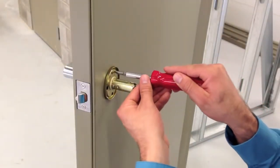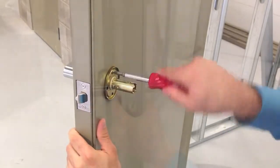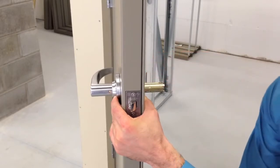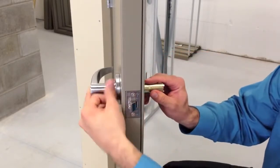Loosen the two mounting screws from the inside spring cage. And while holding the chassis, remove the screws and slide the chassis and lever out of the door.